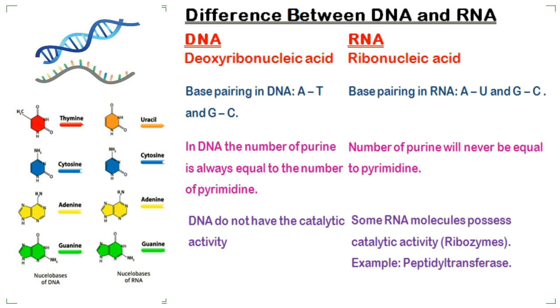In DNA, the number of purines is always equal to the number of pyrimidines. While in the case of RNA, the number of purines will never be equal to pyrimidines.